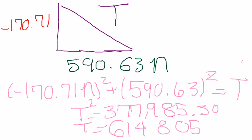T squared equals 377,985. Taking the square root, T equals 614.805 newtons. That's the answer for number 8.